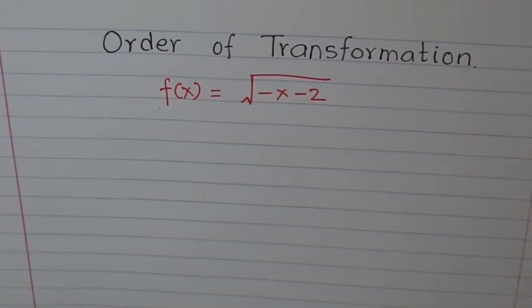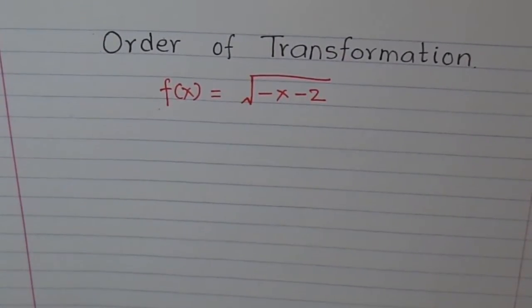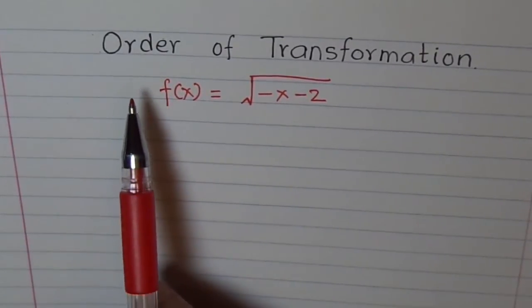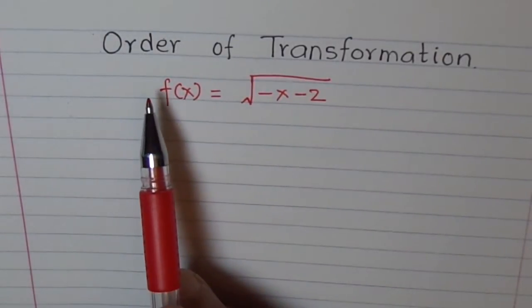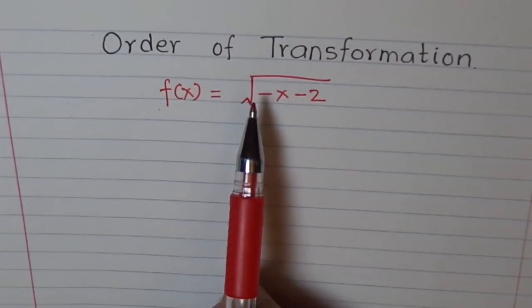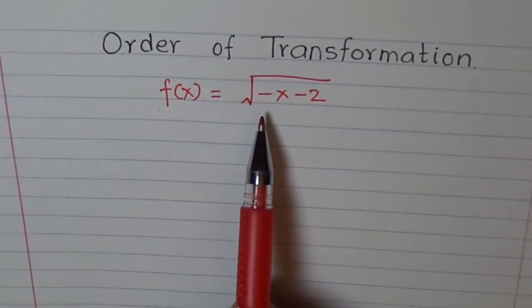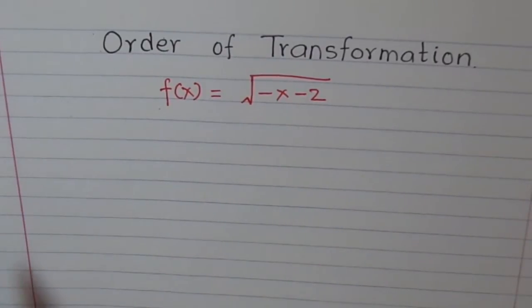Hello, we are talking about common mistakes which people do during transformations. Here is one: the order of transformation. As I have specified many times, we need to follow a proper order. First, we should do multiply, that means stretches and compressions and reflections, and then the translation.